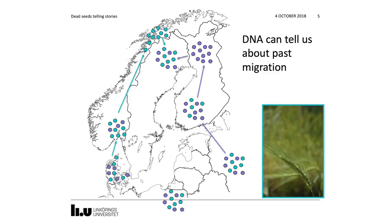The DNA can also tell us about migration patterns. For example, in this hypothetical example of barley — barley originated in Europe and was brought towards Northern Fennoscandia either through Norway or through Finland. You can see that the genetic composition of the populations changes as they migrate north. If we were to study all of these populations, we could say that this population in northern Sweden is a hybrid of seeds brought from Norway and from Finland, for example through trade.